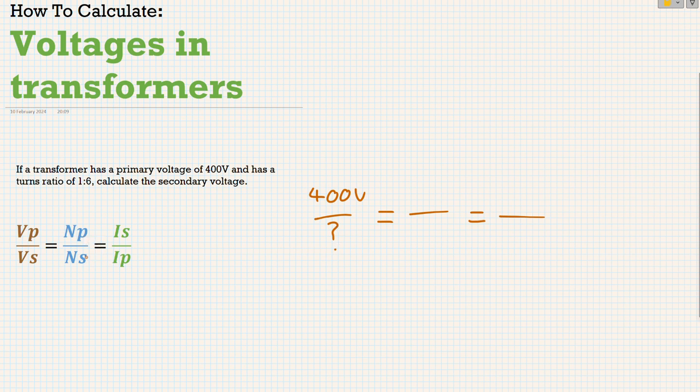Now number of turns primary, number of turns secondary. Well they've given us this information on turns ratio. Now I'll tell you that when you see turns ratio and it gives you the numbers, you can input that as your NS and your NP like this, 1 and 6. Perfect. Current in the question, they've given us absolutely no information. So we're not interested in that. We're just going to use these two sections for our question down here now.